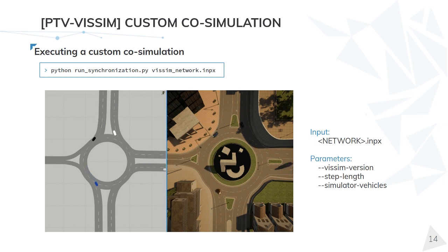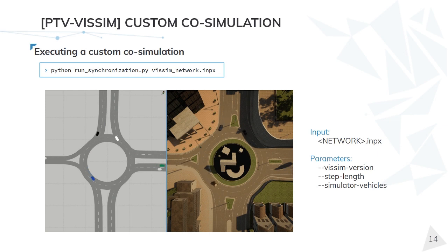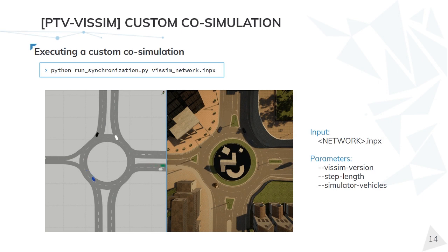Unlike SUMO, in PTBBSim we only have one way to execute co-simulation — through the RunSynchronization script. In the same way as with SUMO, we need to indicate the PTBBSim simulation file, which is the impx file, that we want to execute in CARLA. We also have parameters to customize the behavior of the simulation, but they are quite more limited. The most important one is the Simulator Vehicles parameter, which sets the number of CARLA vehicles that are going to be passed to VSIM. By default, this parameter has a value of 1, so if you want to synchronize more vehicles you will have to initialize the co-simulation with the proper number.